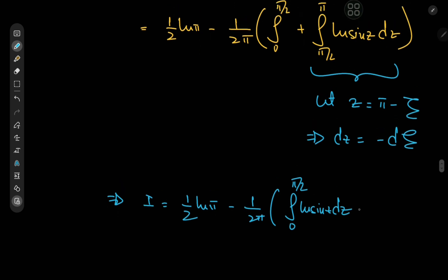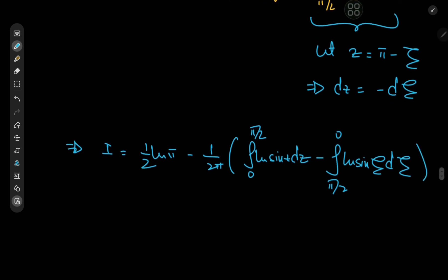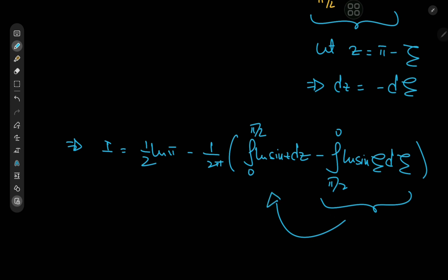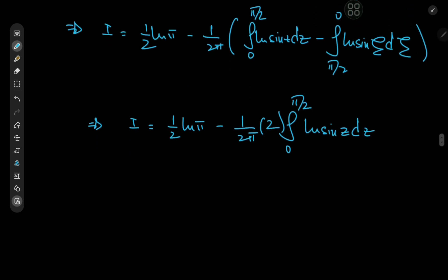After switching limits and cancelling the negative sign from the differential, we find that the second integral is exactly the same as the first. So both pieces combine, and we have I = ½ log π − (1/2π) · 2 · ∫₀^(π/2) log sin(z) dz. We recognize this as Euler's famous log-trig integral, whose value is −(π/2) log 2.